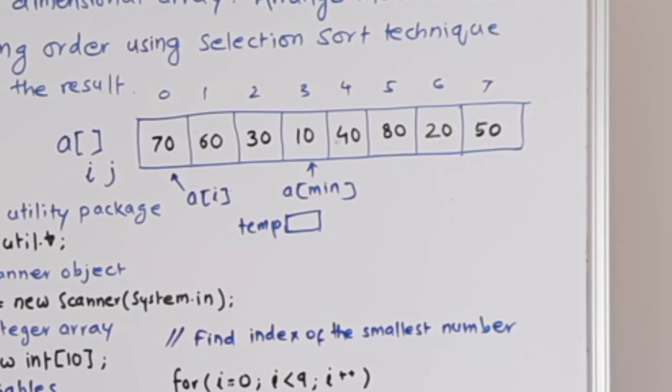So in the first iteration, we will get the smallest number in this cell. In the second iteration, we will get the next smallest number in this cell. This way when the for loop completes, we will get an array in ascending order, sorted in ascending order.